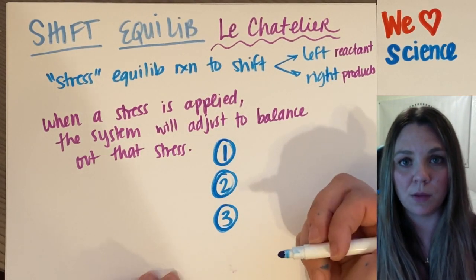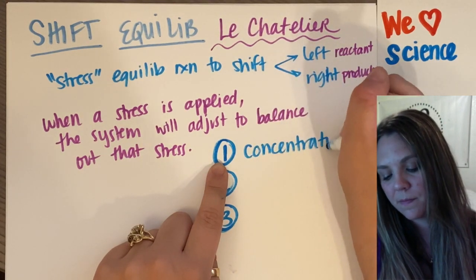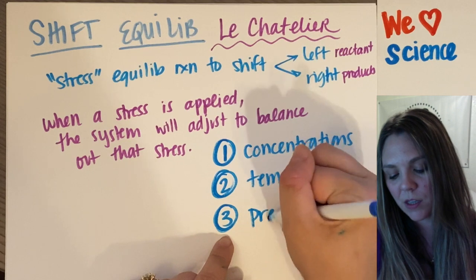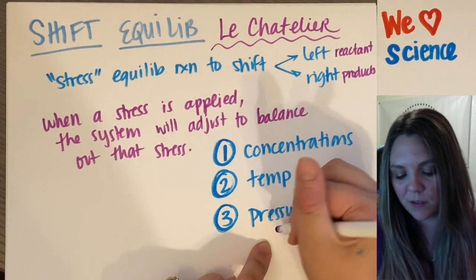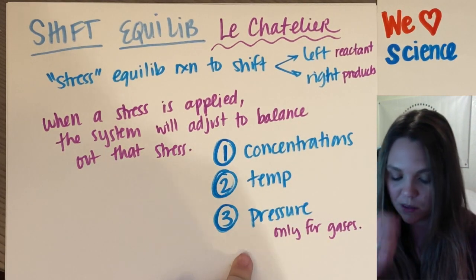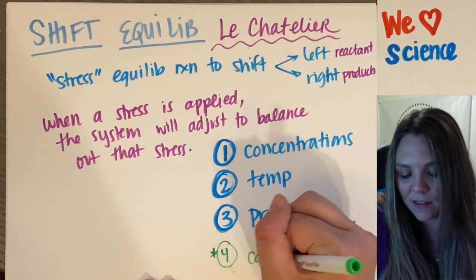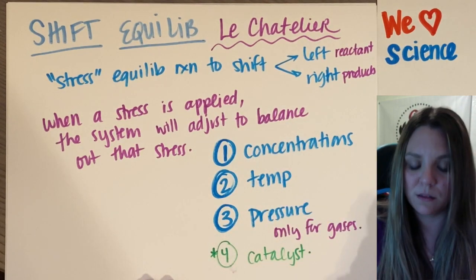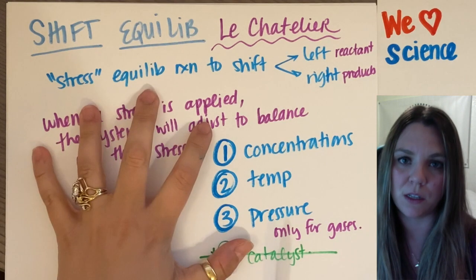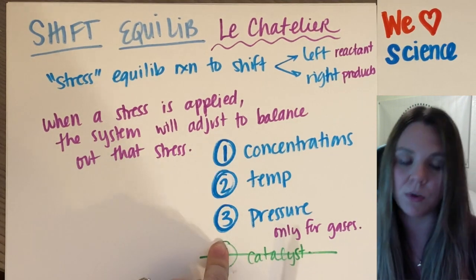Three stressors I can put on an equilibrium reaction: number one is to change the concentrations, number two is to change the temperature, and number three is to change the pressure — and the caveat for pressure is only for gases. A number four that always comes up is adding a catalyst, but no — if I add a catalyst to the system, it just makes the reaction rate happen faster. It does not shift equilibrium, so please don't fall into that trap.